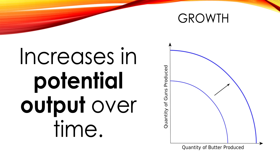We measure economic growth usually using a statistic called GDP — gross domestic product. By comparing our GDP this year to our GDP last year, we can see in some ways whether the economy is growing and how fast it's growing. This has implications for how people live, as we will see in another video.